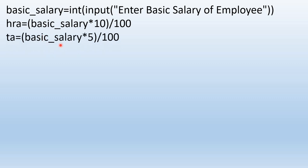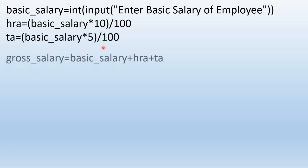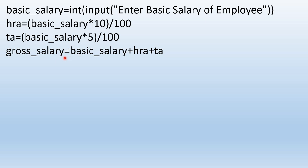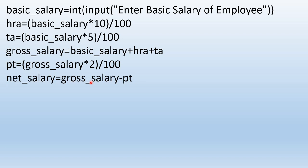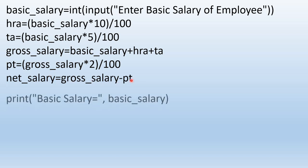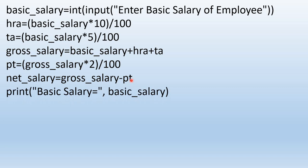We calculate TA, which is 5 percent of basic salary. Then we calculate gross salary: gross_salary = basic_salary + HRA + TA. Then we calculate professional tax, which is 2 percent of gross salary. And then we calculate the net salary, which is gross_salary minus professional_tax. Then we display all our output.